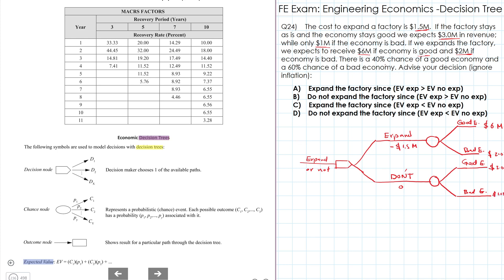Now for the probabilities, we have 40% chance of a good economy. So it's 0.4 and we have 0.6 chance of bad economy.